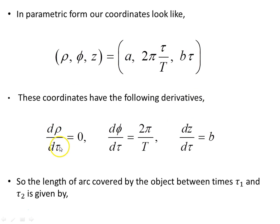These coordinates have the following derivatives. drho/dtau is 0. dphi/dtau is 2pi on capital T, so all of that's a constant. And dz/dtau is b.